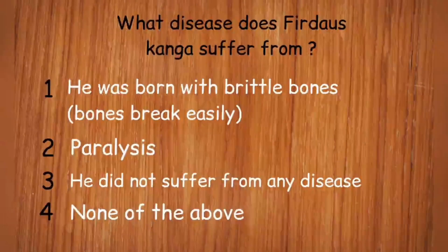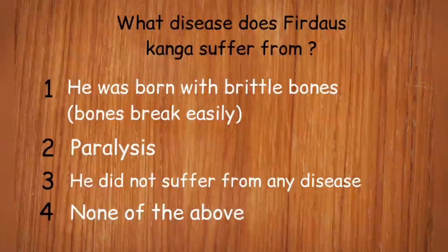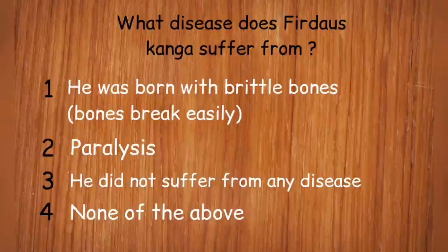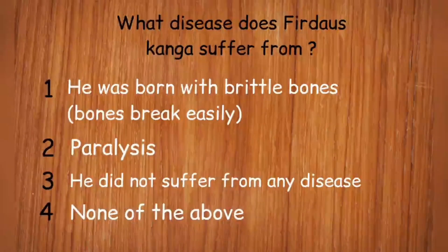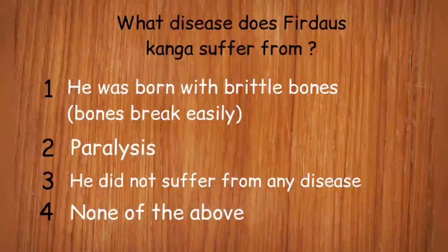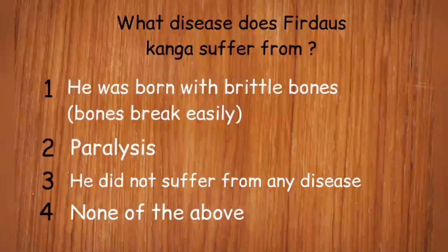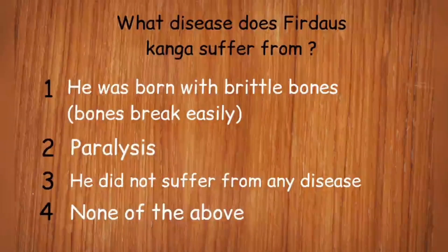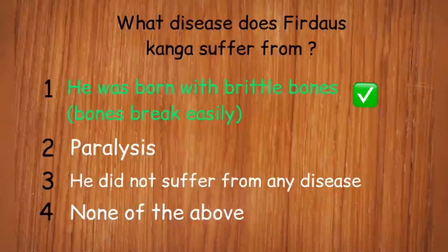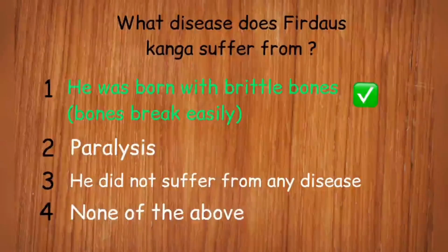What disease does Firdaus Kanga suffer from? The options are: he was born with brittle bones, paralysis, he did not suffer from any disease, or none of the above. Firdaus Kanga was born with brittle bones. This is a genetic disorder in which bones tend to break very easily.